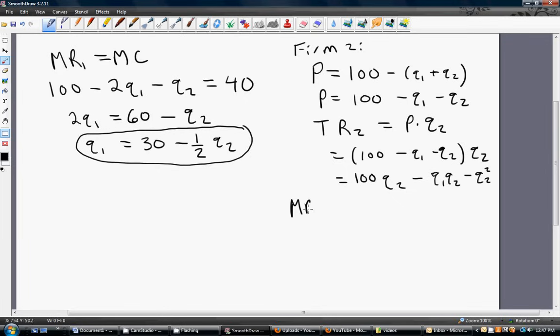To get marginal revenue, we're going to take the partial derivative of the total revenue function with respect to the output of firm 2. And we get 100 minus 2 Q subscript 2 minus Q subscript 1.